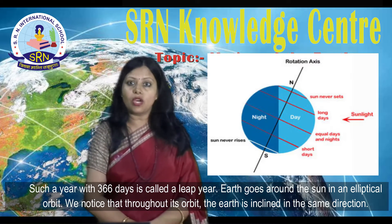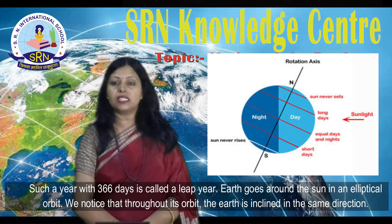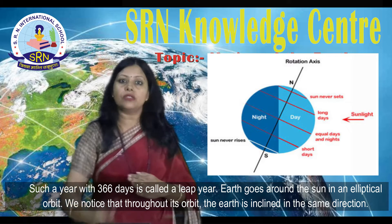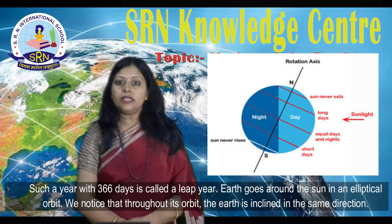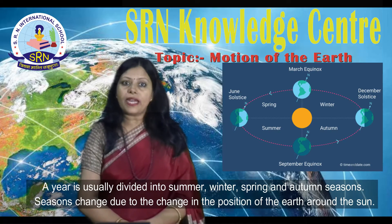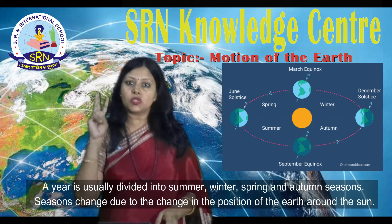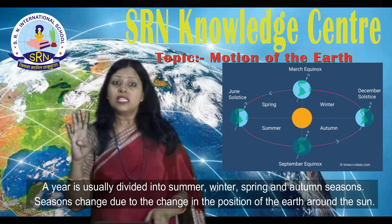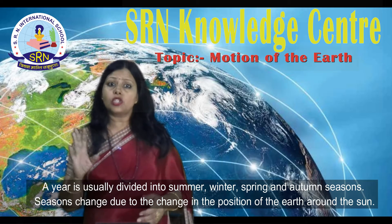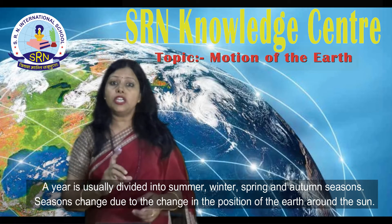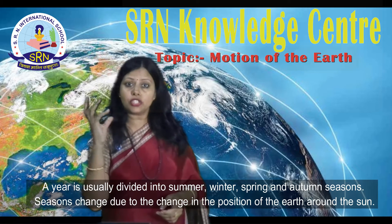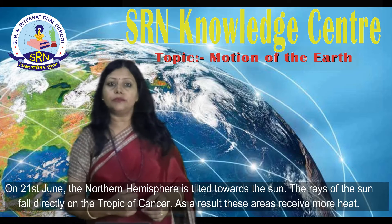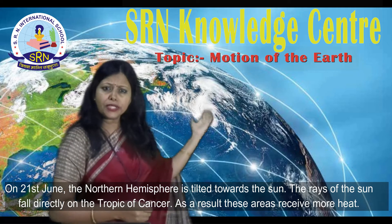The Earth goes around the Sun in an elliptical orbit. Throughout its orbit, the Earth is inclined in the same direction. Our year is usually divided into four seasons: summer, winter, spring, and autumn. Seasons change due to the change in the position of the Earth around the Sun.